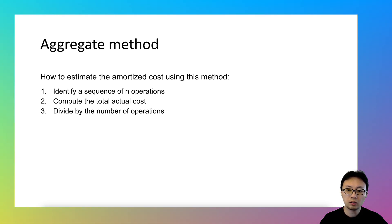The second step is about analyzing the actual cost of all operations. So you need to add up the worst case time complexity of each operation in that sequence and compute the total cost T(n). The third step is to divide the total actual cost by the number of operations.